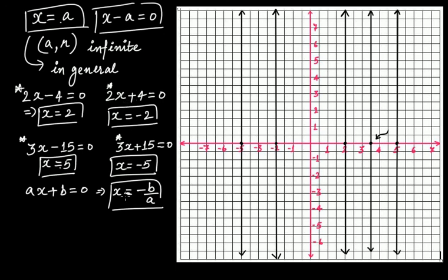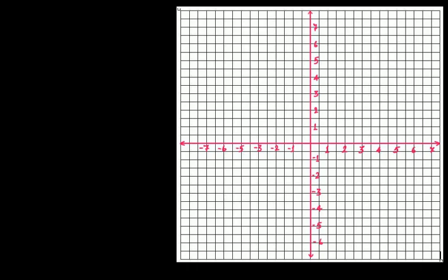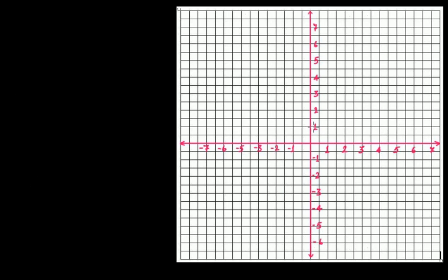The last point we have to discuss is the equation of the y-axis. If you have understood what we just covered, then you already know this one. We learned about x = 3, x = A, and x = −B/A. So the equation of the y-axis is actually x = 0.